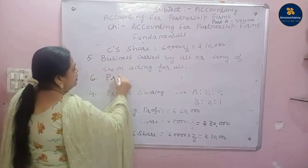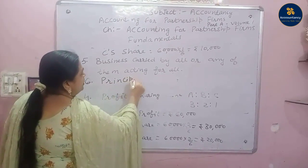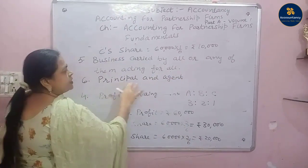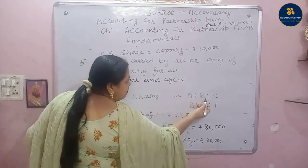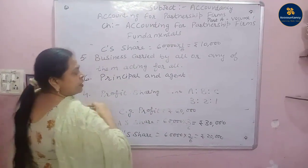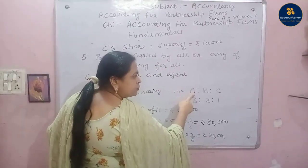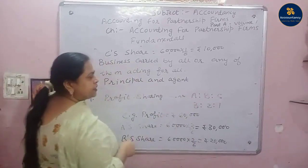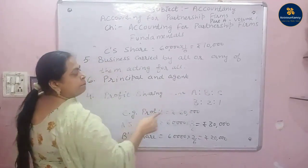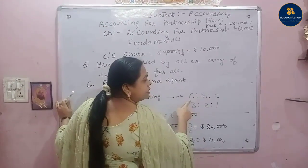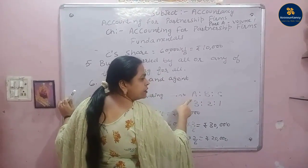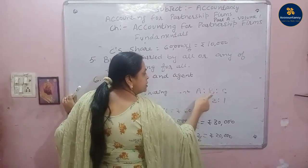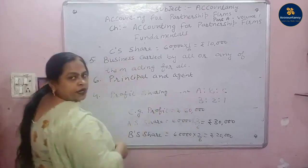The sixth feature is principal and agent — every partner is a principal as well as an agent. For example, with three partners A, B, and C: A is a principal because he has invested money and is responsible for work done by B and C. But A is also an agent because he does work for the partnership firm. Similarly, B and C are principals because they are responsible for the work done by A.